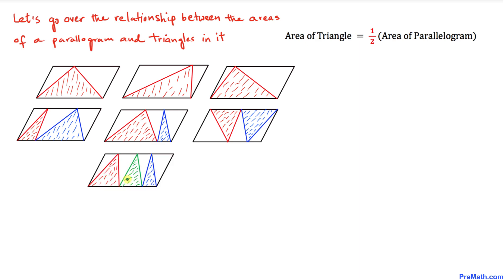Here is one more example: in this scenario we have three shaded triangles whose combined base equals b, the same as the base of the parallelogram, and their height is also h. Therefore, the combined area of these three triangles is once again one-half times the area of the parallelogram.